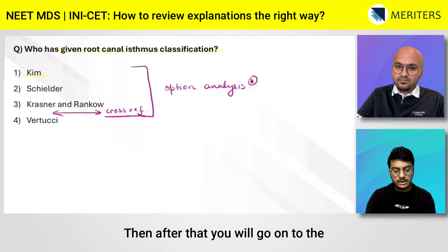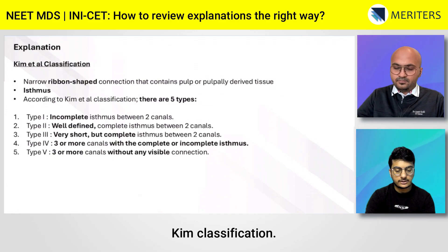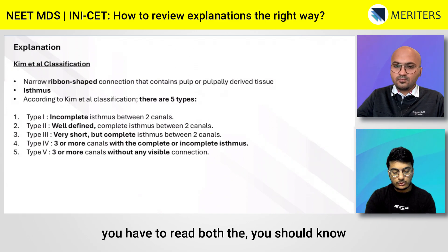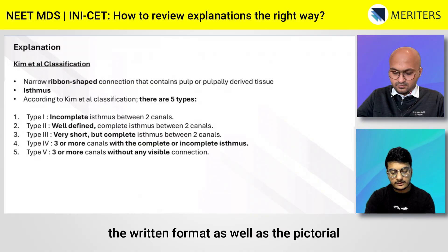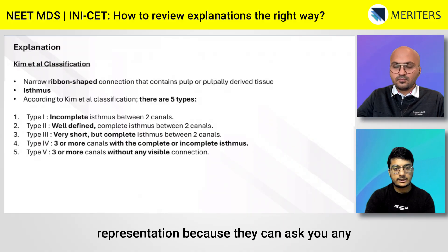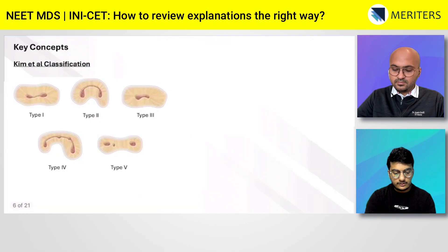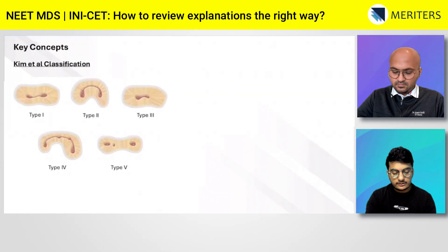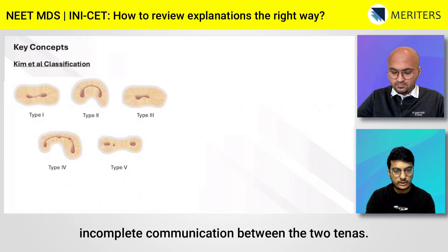Similarly, Vertucci gave the root canal configuration. That is how you review — then after that you go on to the explanation for Kim's classification. You should know both the written format and the pictorial representation, because they can put a diagram and ask which type it is. Starting with type 1: type 1 is an incomplete communication between the two canals.